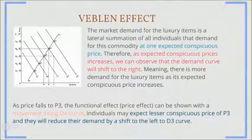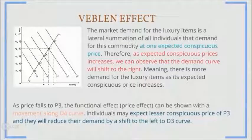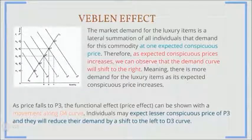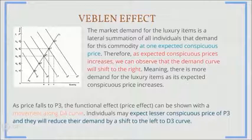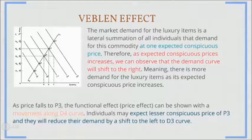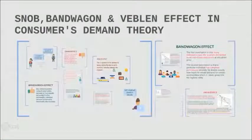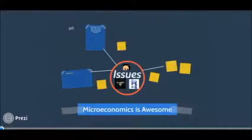The last one is the Veblen effect. In the Veblen effect, the market demand for luxury items is a lateral summation of all individuals demanding this commodity at one expected conspicuous price. Therefore, as the expected conspicuous price increases, we can observe that the demand curve will shift to the right, meaning there is more demand for the luxury item. But as price falls to P3, the functional price effect can be shown with a movement along DA curve. Individuals may expect a lesser conspicuous price of P3 and therefore will reduce their demand by a shift to the left to D3 curve.